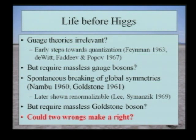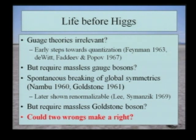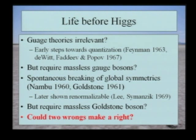In parallel, Nambu, followed up by Goldstone, had shown how you could break spontaneously global symmetries — but that also gave you massless bosons. It had been shown by Lee and Zumanzyk that these theories were renormalizable, and breaking a symmetry spontaneously did not change renormalizability properties. However, you were stuck with two different sets of massless bosons: the massless gauge bosons and the massless Goldstone bosons. Could two wrongs make a right?